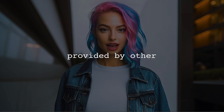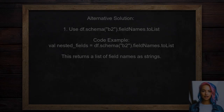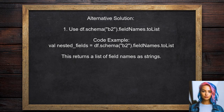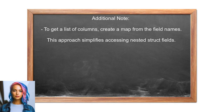Now, let's look at the answers provided by other users. An alternative approach is to use the field names method. You can obtain a list of all fields within a struct by accessing the schema of the data frame. If you need a list of columns instead, you can create a map from this list. This method is straightforward and efficient for accessing struct fields.